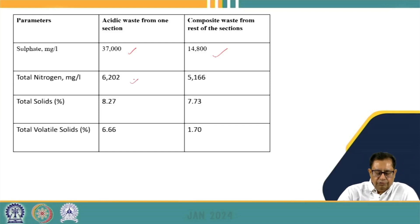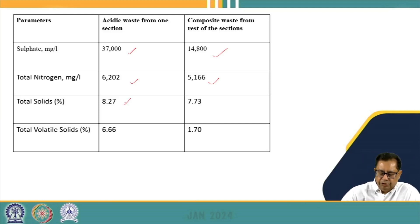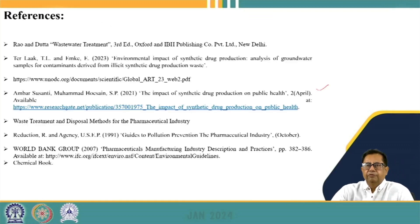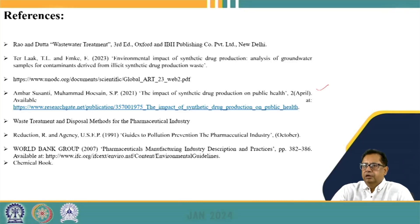Chloride levels are very high — 20,500 mg/L in the acidic waste and 17,000 mg/L in the composite section. Sulphate in the acidic waste is nearly 37,800 mg/L, diluted to 14,800 mg/L in the composite section. Total nitrogen is 6,202 mg/L in acidic waste and 5,660 mg/L in composite waste, enhanced by ammonium salts used during the process. Total solids are 8.27% and 7.73% respectively, while volatile solids are 6.66% in acidic waste and 1.7% in composite waste. Wide variations in wastewater characteristics require treatment tailored to the specific pharmaceutical industry, which will be discussed in coming lectures.